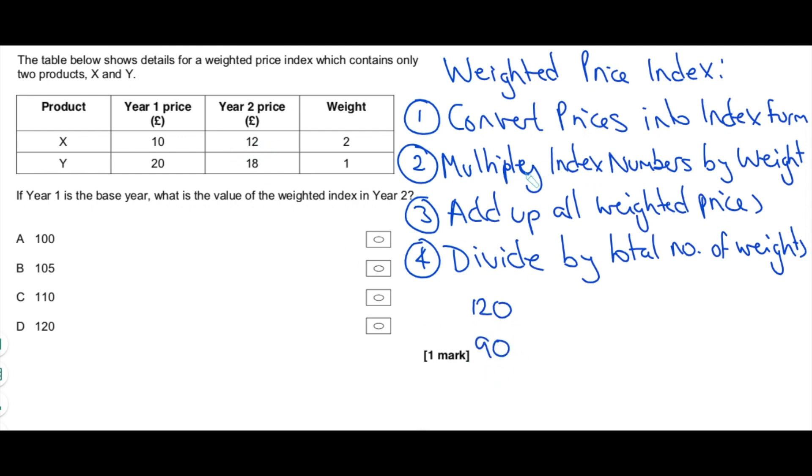What do we need to do then? Multiply the index numbers by their weight. So 120 times two, that's going to give you 240. 90 times one is going to give you 90. We then need to add up the weighted prices and that's going to give us 330. And then we have to divide by the total number of weights, which is three. Two plus one, right? Three. 330 divided by three is 110. And there is your weighted price index in year two. And therefore, the answer is C, 110.